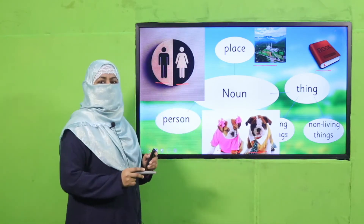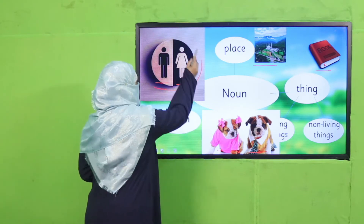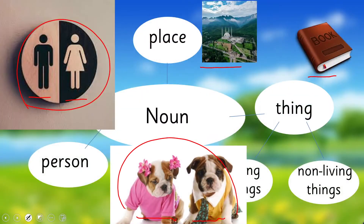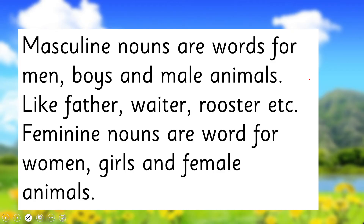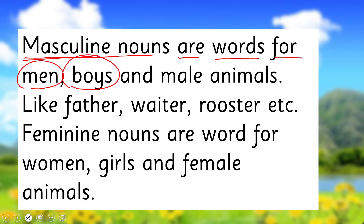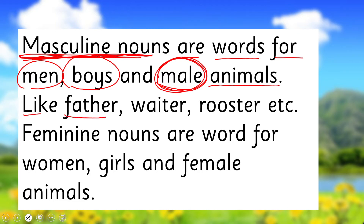When we talk about a person or living things, they have gender — male and female. These are known as genders. Nouns which don't have gender are known as neuter gender nouns. Masculine nouns are words for men, boys, and male animals. The nouns which represent or refer to males only are masculine nouns — like father, waiter, rooster, etc.